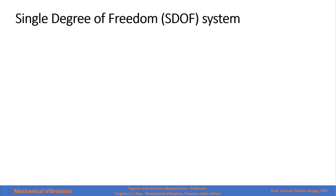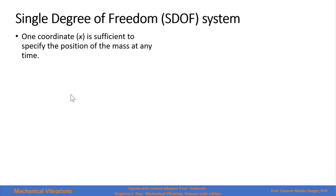A single degree of freedom system: if we have only one degree of freedom, it means that only one coordinate is sufficient to describe the position of the system or the mass at any time.